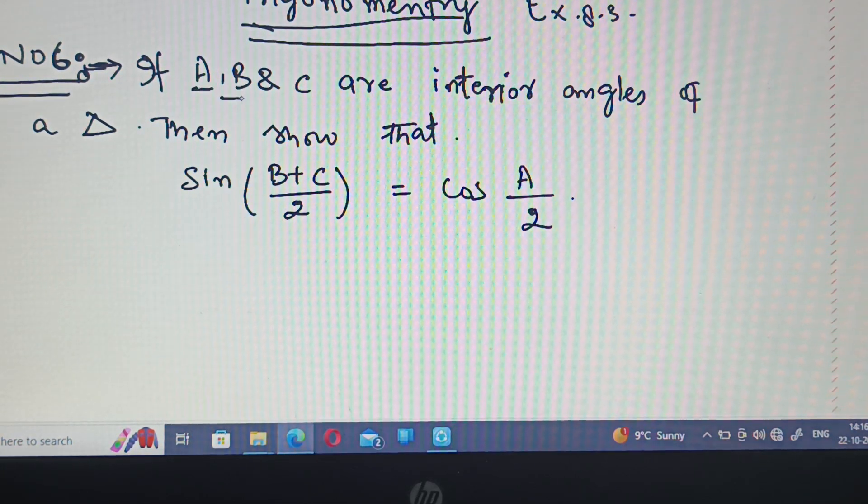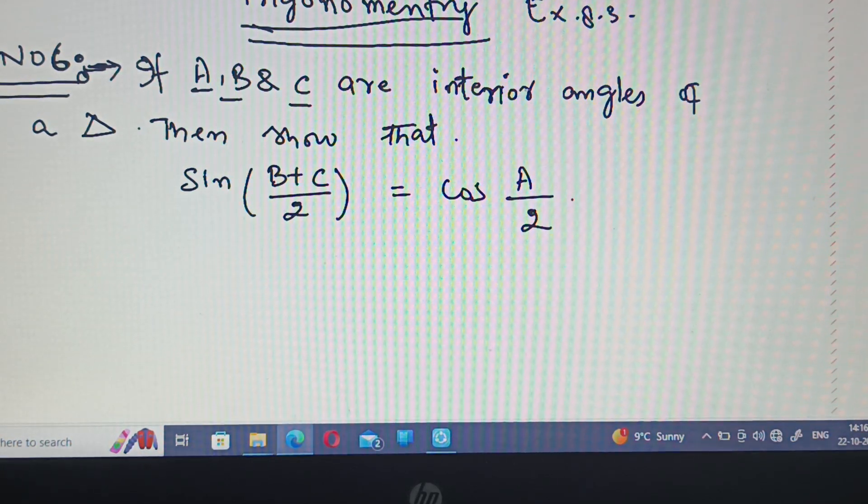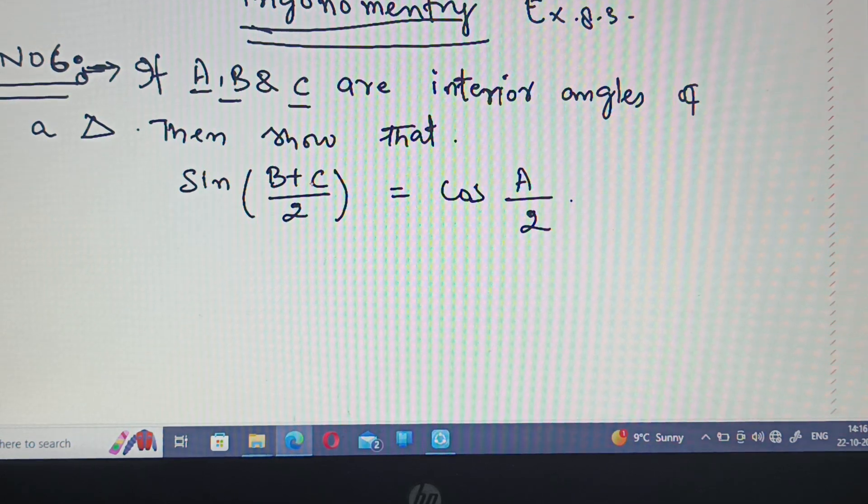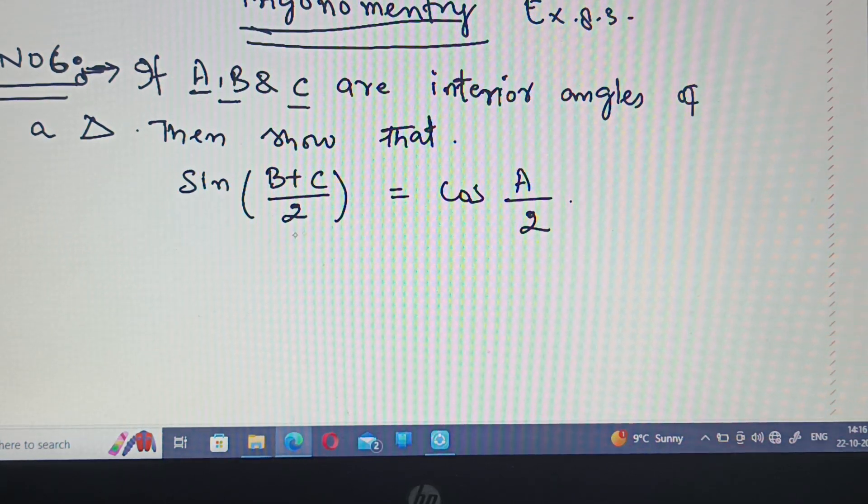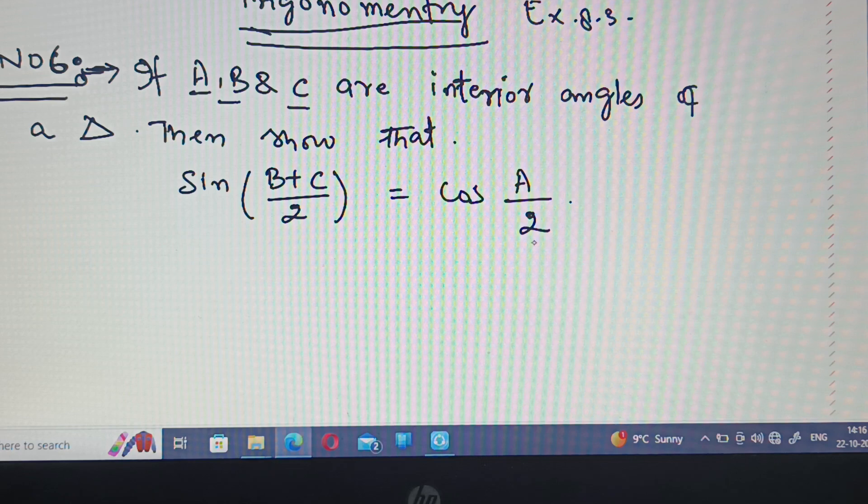If A, B and C are interior angles of a triangle, then show that sin of B plus C divided by 2 is equal to cos A upon 2.